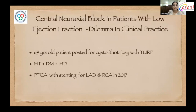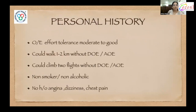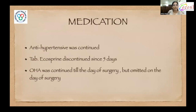A case of a 69-year-old patient posted for cystolithotomy with TURP. Patient was a known case of hypertension, diabetes, and IHD. Patient had undergone PTCA with stenting for the left anterior descending and right coronary artery in 2017. Patient was a non-smoker, non-alcoholic. Exercise tolerance was moderate to good; patient could walk one to two kilometers and climb two flights of stairs without any dizziness or angina. No history of angina, dizziness, or chest pain. Patient was taking tablet Valsartan 40 mg at bedtime, which was continued throughout the preoperative period. Tablet Ecosprin was discontinued five days prior. Oral hypoglycemics for diabetes were continued till the day of surgery but omitted on the day of surgery.